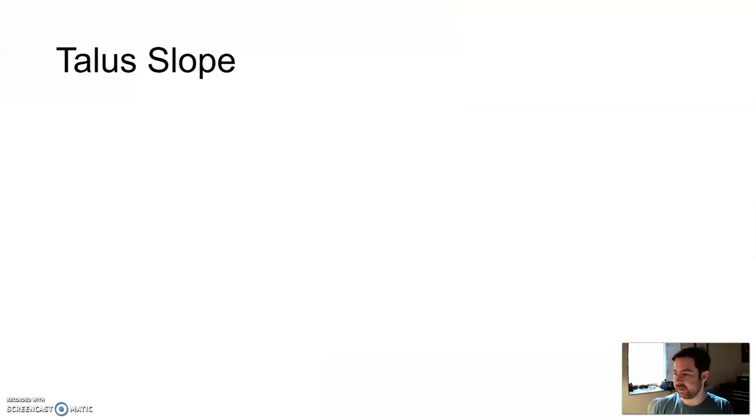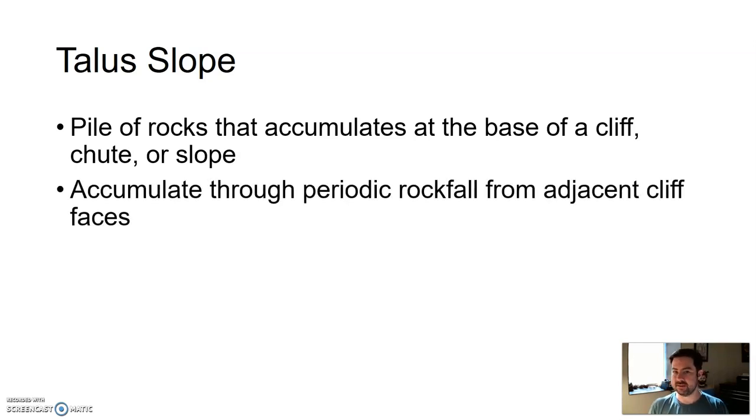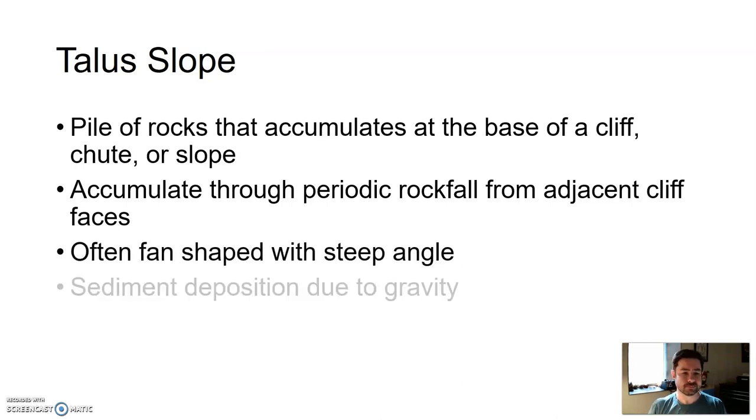Another depositional feature is called a talus slope. It's a pile of rocks that accumulate at the base of a cliff, chute, or slope. Typically, you can find these at the bases of buttes, mesas, plateaus. The sediment builds up through slow accumulation through periodic rock fall from the adjacent cliff faces. Often, you get a fan shape with a very steep angle. But in this case, what caused the sediment to deposit is gravity. Gravity pulled that material down. As weathering and erosion occurs, gravity eventually pulls it down. You get this big buildup of loose sediment at the base of structures. That loose sediment buildup is called a talus slope.